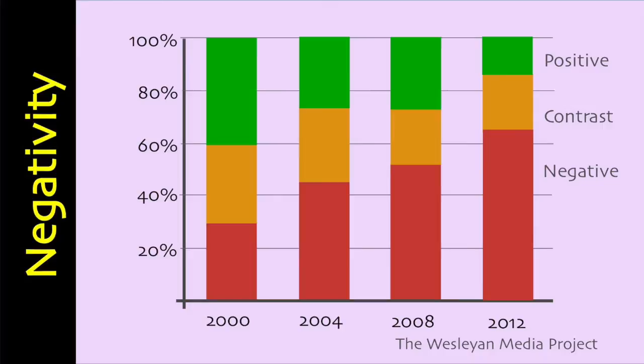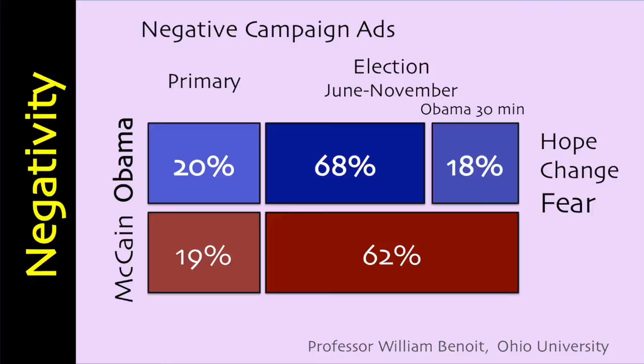There needs to be balance. William Benoit found that in television spots from 1952 to 2004, candidates averaged about 40% attacks in their ad statements. Presidential ads discussed policy in 62% of their statements and character in 38%. In 2008, the statements in Obama's ads were about 68% negative, compared to 62% for John McCain. Obama's historic 30-minute infomercial was more positive than the campaign, with only 18% attacks, and it never mentioned McCain or President Bush by name. Obama discussed 55% policy and 45% character.